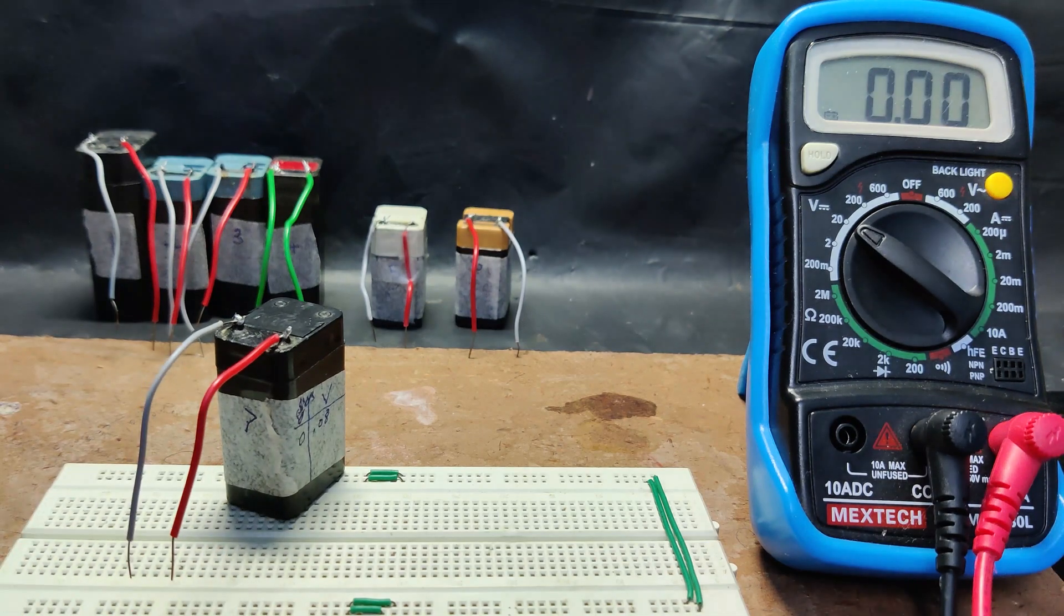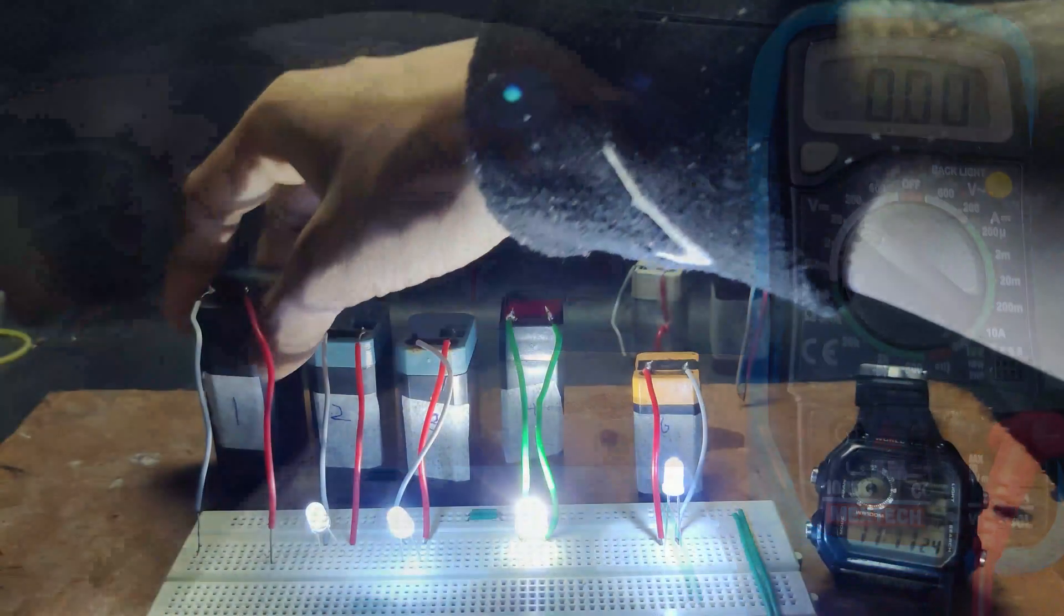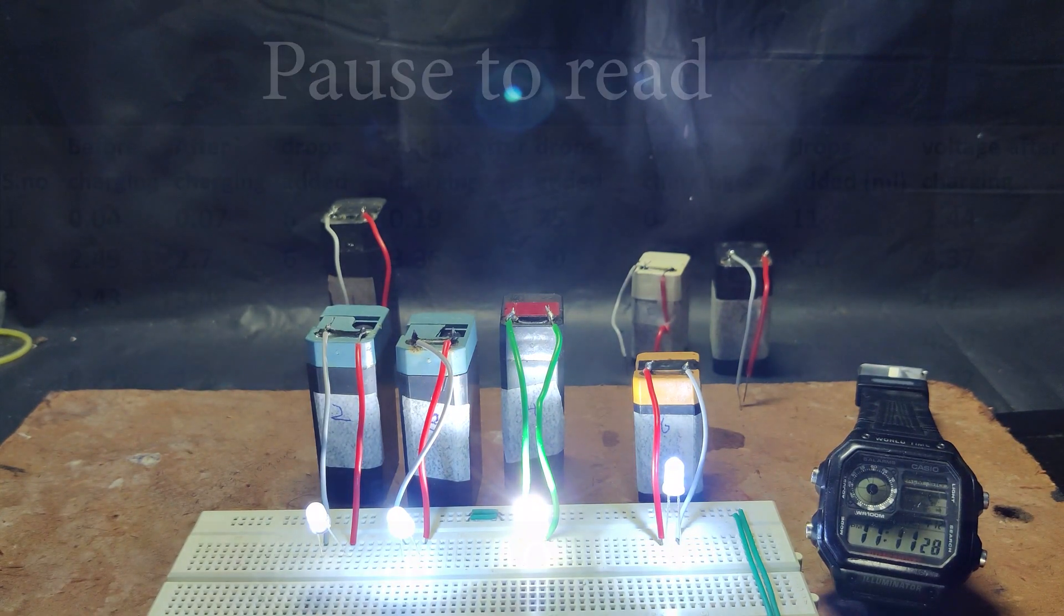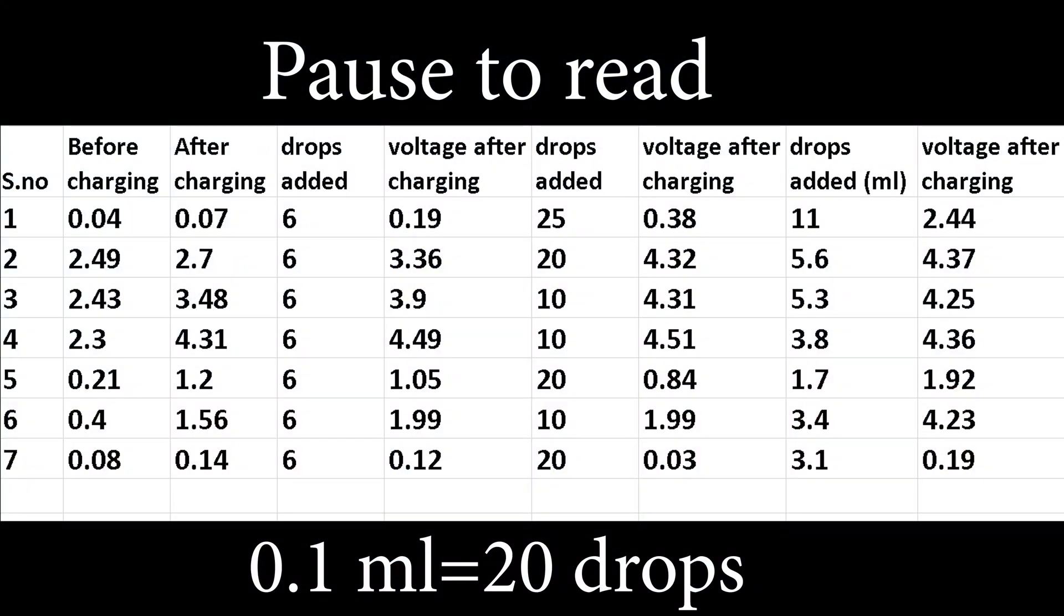Let us check if the LEDs are working or not. So we can see a significant increase in the voltage. This is the table of contents of the experiment. From this table we can conclude that adding distilled water does improve the voltage and you can add a maximum amount of distilled water. There is one problem: if you add too much water, then while charging the water might leak.